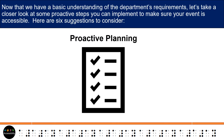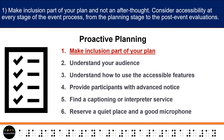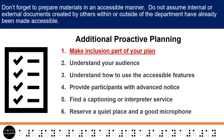Now that we have a basic understanding of the department's requirements, let's take a closer look at some proactive steps you can implement to make sure your event is accessible. Here are six suggestions to consider: 1. Make inclusion part of your plan and not an afterthought. 2. Consider accessibility at every stage of the event process, from the planning stage to the post-event evaluations. 3. Don't forget to prepare materials in an accessible manner. 4. Do not assume internal or external documents created by others have already been made accessible.